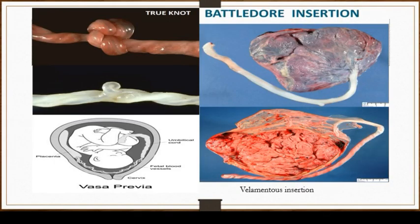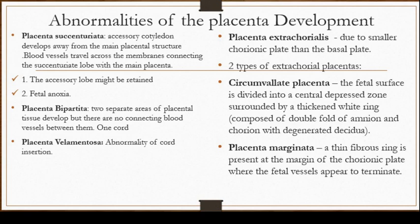These are some photos illustrating what we've discussed. The upper left picture shows true knots, and below it we have false knots. Then we have the battledore insertion of the cord, inserting into the edges or margins of the placenta. Then we have the velamentous insertion, where the cord inserts into the membranes of the placenta. With vasa previa, as you can see in the lower left diagram, the vessels of the umbilical cord are below the presenting part and above the internal os, so when the membranes rupture there is a high possibility the vessels may tear or rupture.